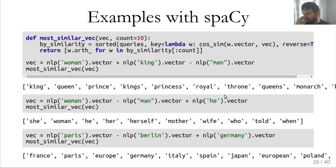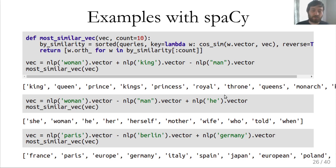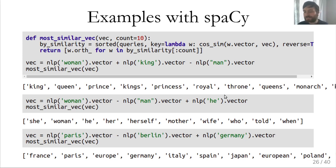What's interesting is that this model was not trained to produce these analogies at all — it was trained to predict which words appear in the context of other words — but somehow in the process it learned representations on which arithmetic gives these semantic relationships.